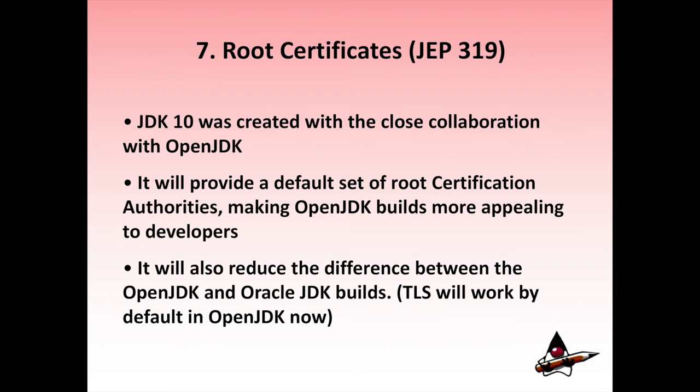Feature 7: Root Certificates, JEP 319. This is another important change Java 10 is bringing. JDK 10 was created with close collaboration with OpenJDK, and this feature reflects that. It will provide a default set of root certification authorities, making OpenJDK builds more appealing to developers, and also aims to reduce the difference between OpenJDK and Oracle JDK builds. Critical security components such as TLS will now work by default in OpenJDK builds.